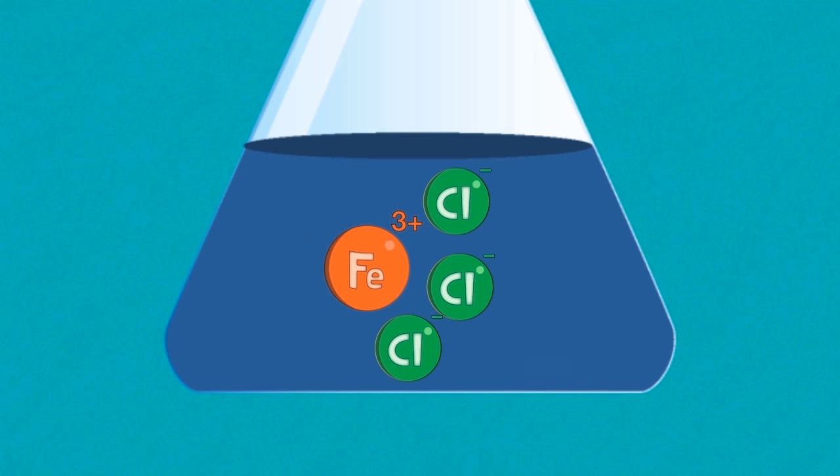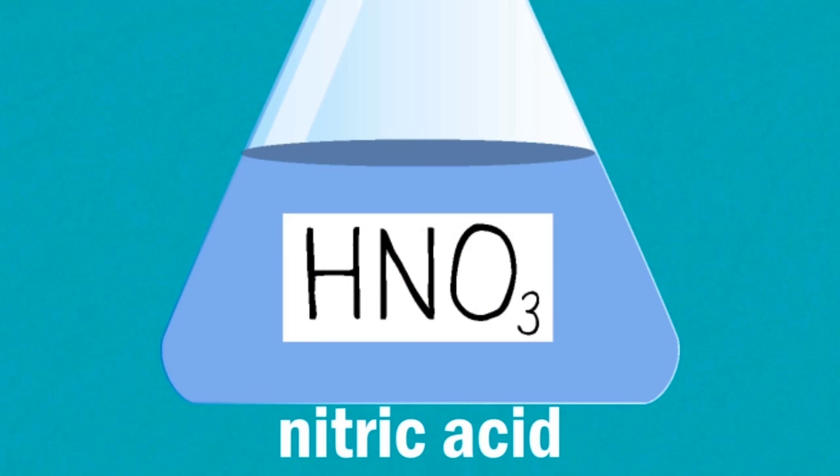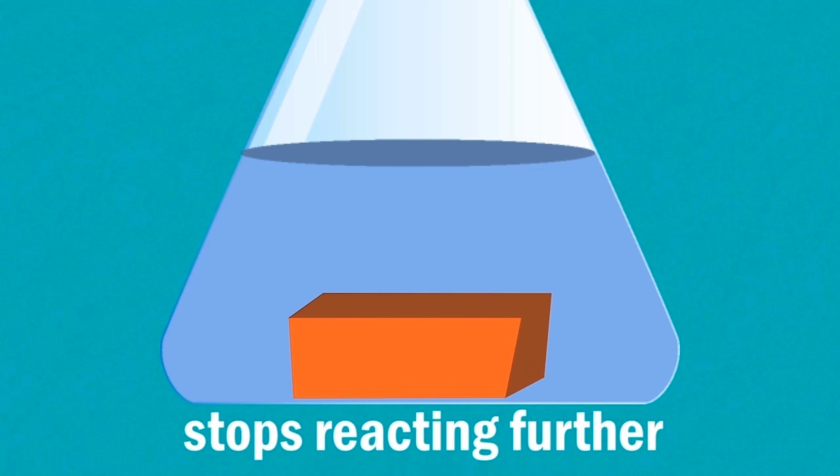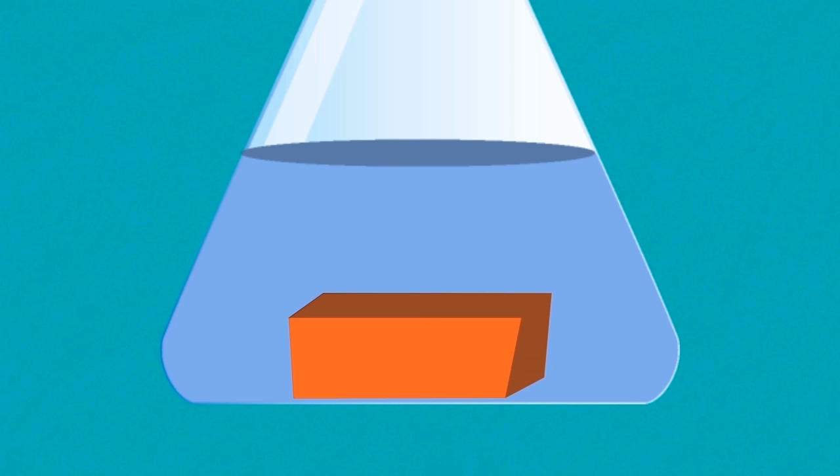In some concentrated acids like nitric acid the surface of the iron forms an oxide layer and stops reacting further. This is not observed with other concentrated acids. The process is called passivation.